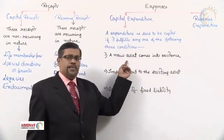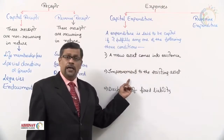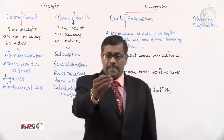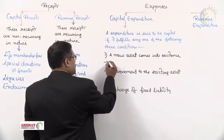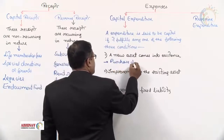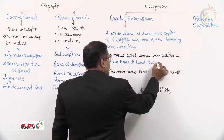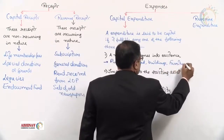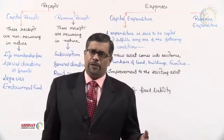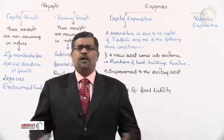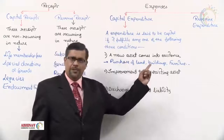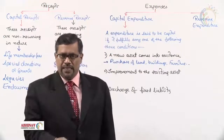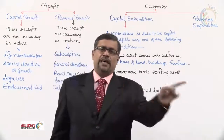The three conditions are: number one, a new asset comes into existence; number two, improvement to the existing asset; number three, discharge of a fixed liability. When a new asset comes into existence — such as purchase of land, furniture, plant, machinery, vehicles, computers, or motor cars — a new asset is purchased. The first condition is fulfilled, so that expenditure has to be capital expenditure.